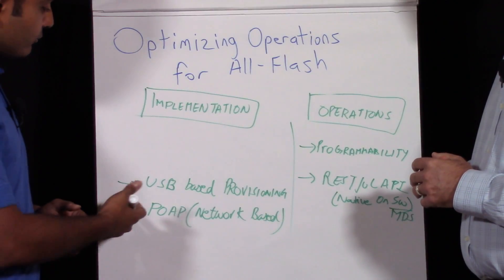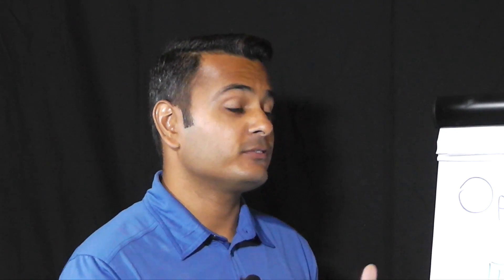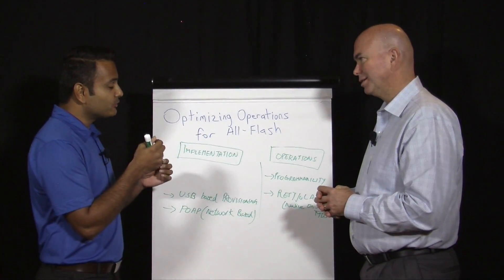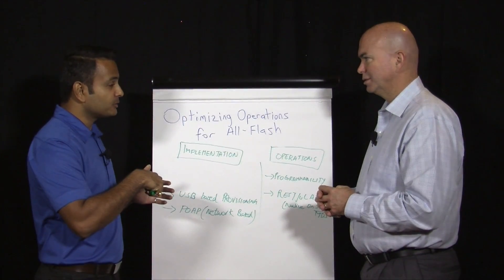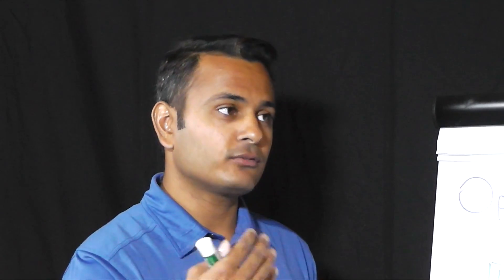The second approach is network-based provisioning, which is really cool and gets rid of console cables and walking to data centers. But if you have to configure 20 or 50 switches, you still have to touch all of them. What you can do instead is connect a network cable between your management network and the management port on the MDS switches. The switch is intelligent enough to contact a DHCP server, get an address automatically, and download a script that further downloads the configuration files, software images, and license.